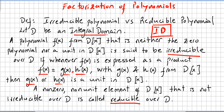So we have an integral domain, and this polynomial is in the polynomial integral domain. We are not talking about the zero polynomial, and we are not talking about units. So f(x) is going to be called irreducible over the integral domain if you can express f(x) as a product of two polynomials and one of them is a unit in the polynomial integral domain. A non-zero, non-unit element — if it is not irreducible, it will be reducible.